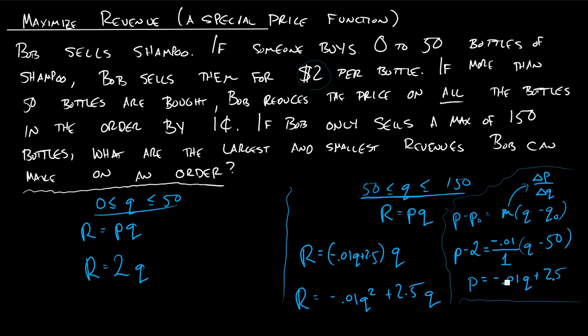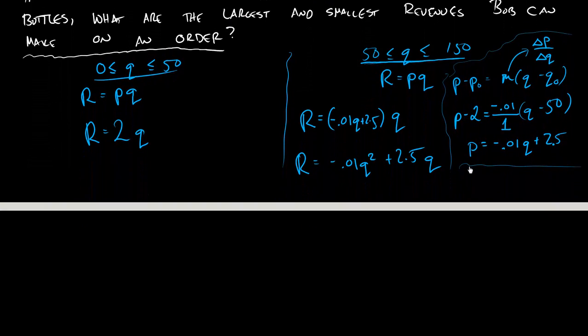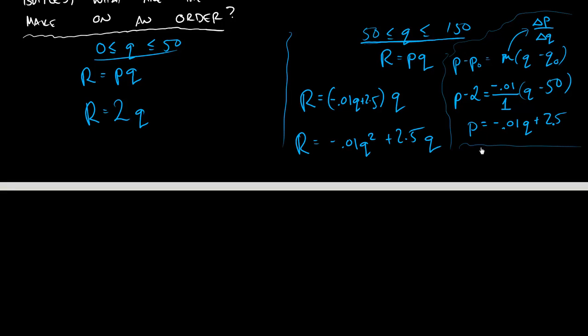Now we want to be maximizing revenue, largest and smallest quantities. And we're going to have to treat each interval separately. So what do we do when we want to maximize? We find where the derivative is equal to 0. So in this case, in our 0 to 50 case, R prime of Q is going to be equal to 2. You might say, well, 2 is never equal to 0, so I'm done there. I don't have to worry about that interval at all. But actually you do.